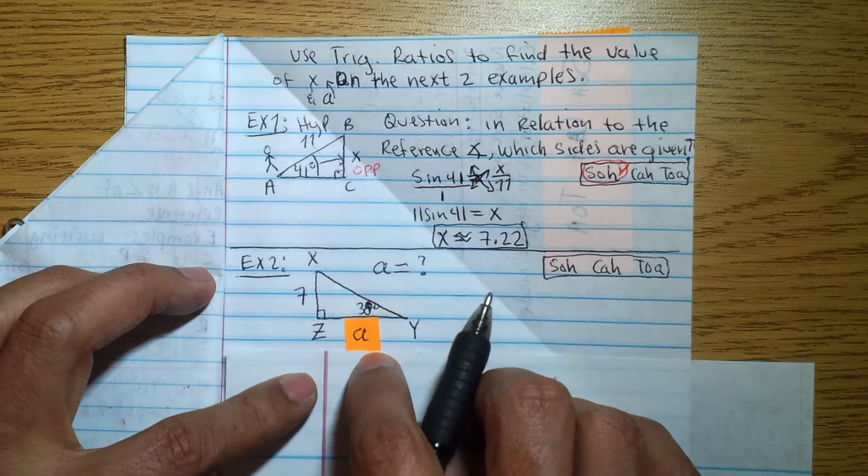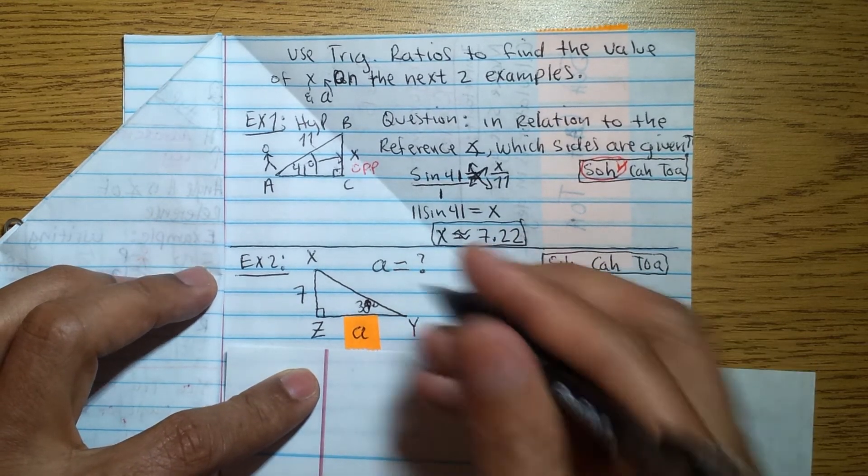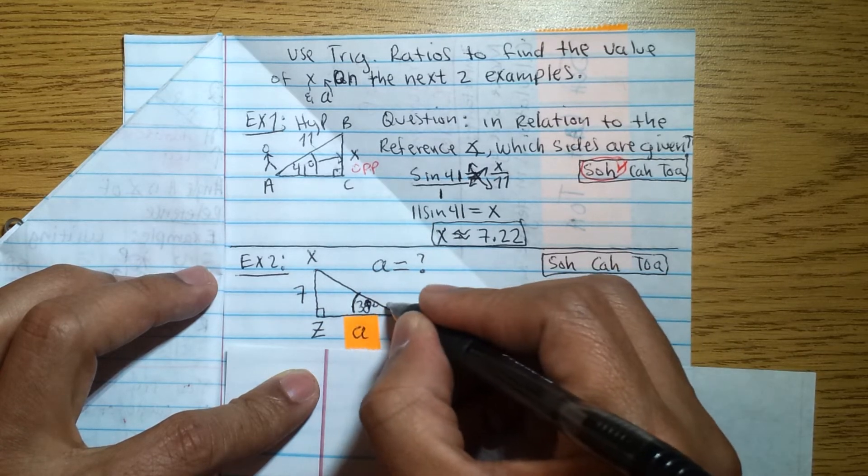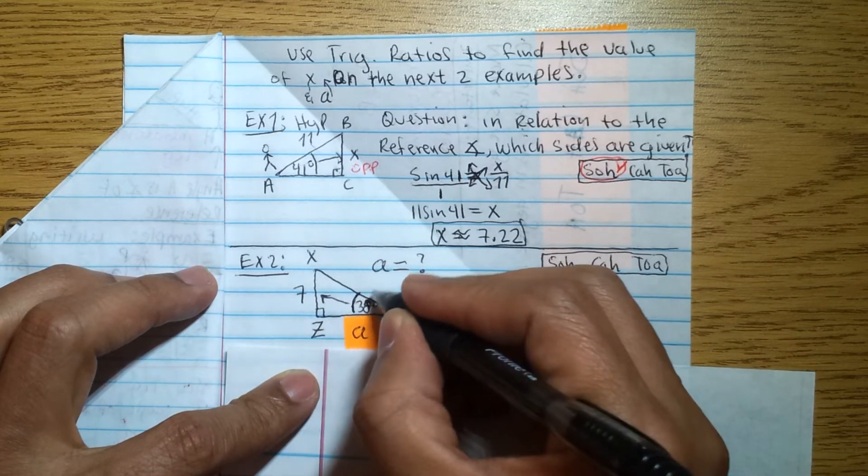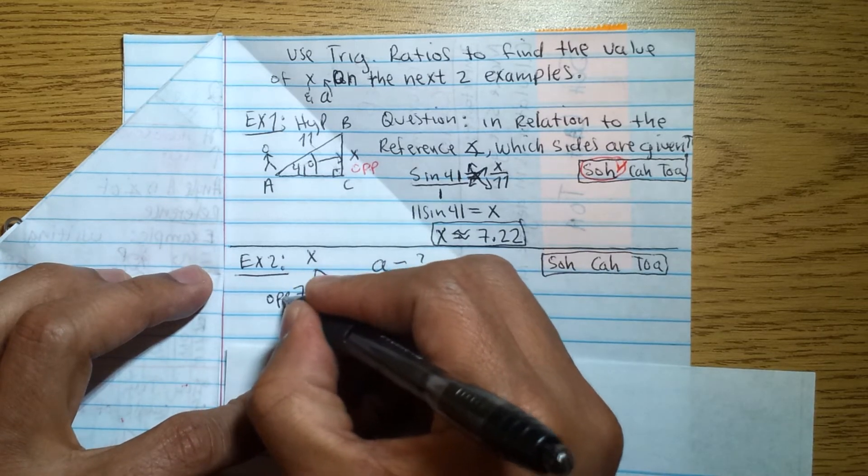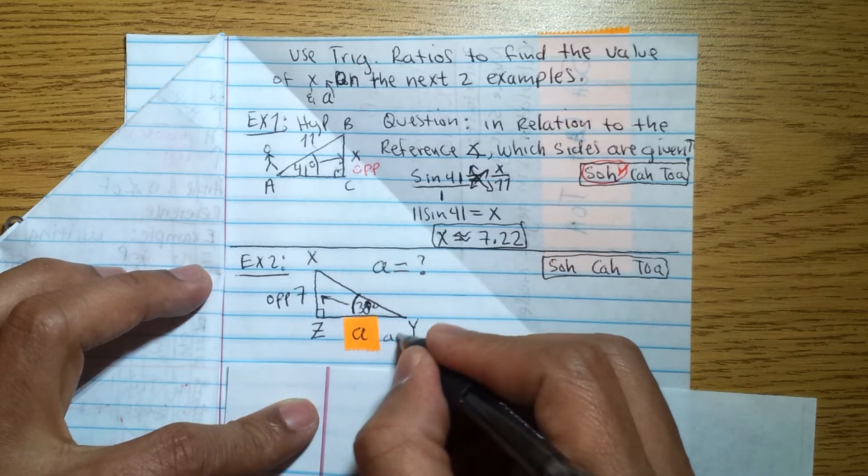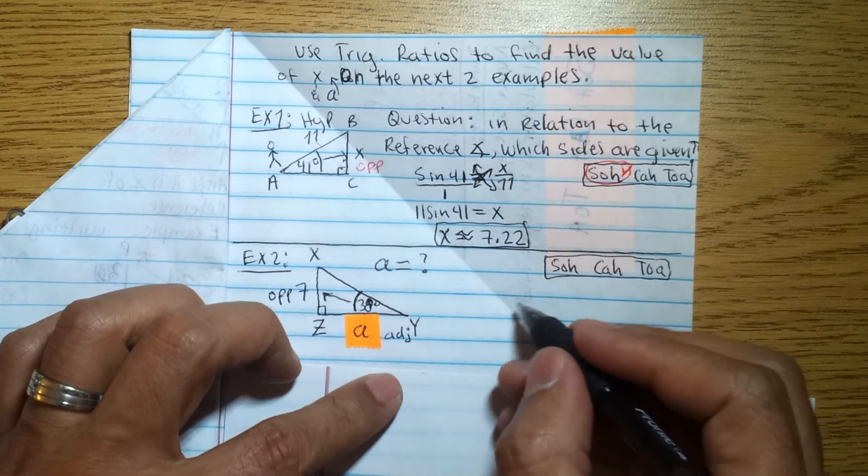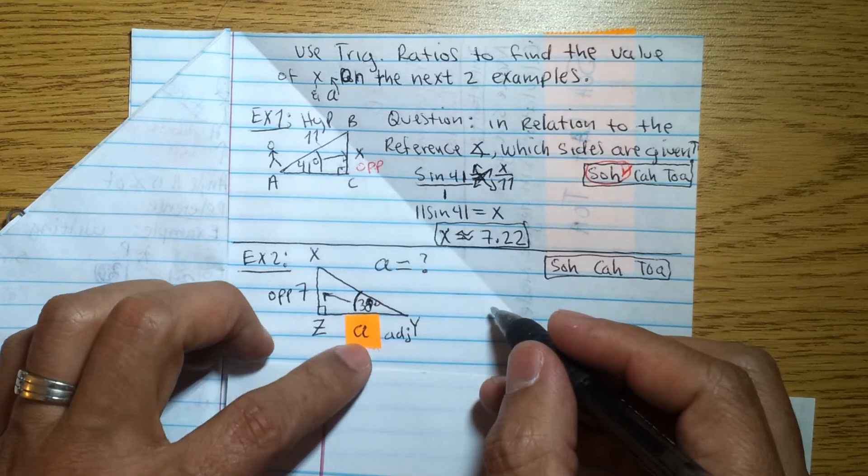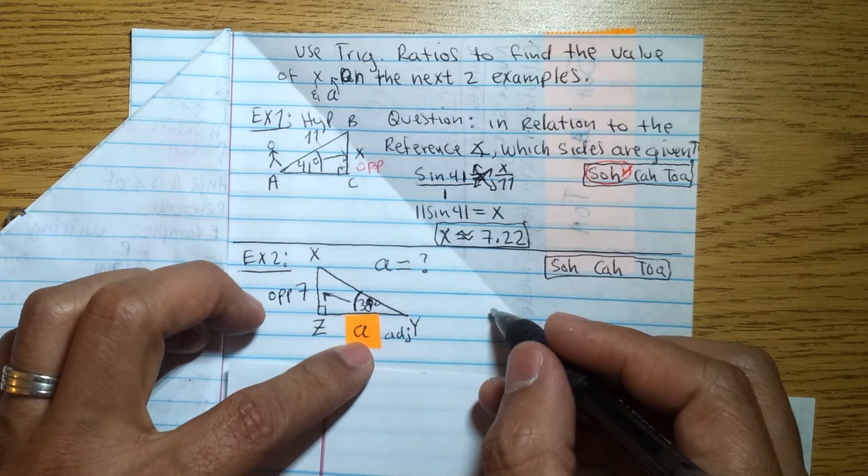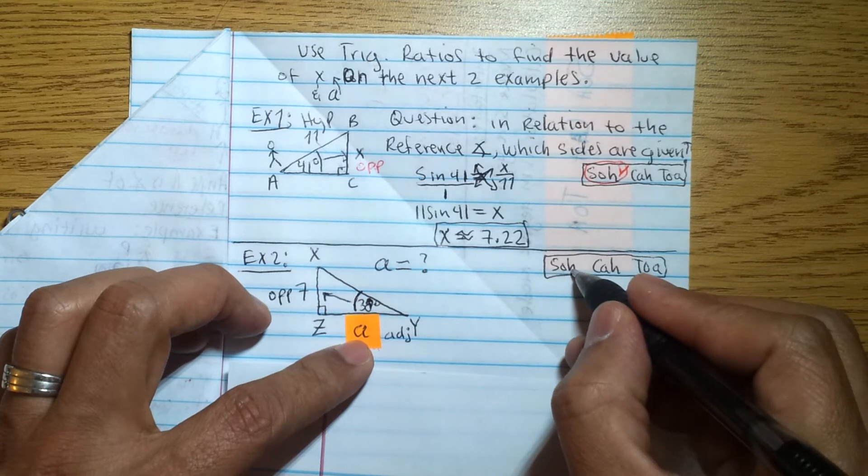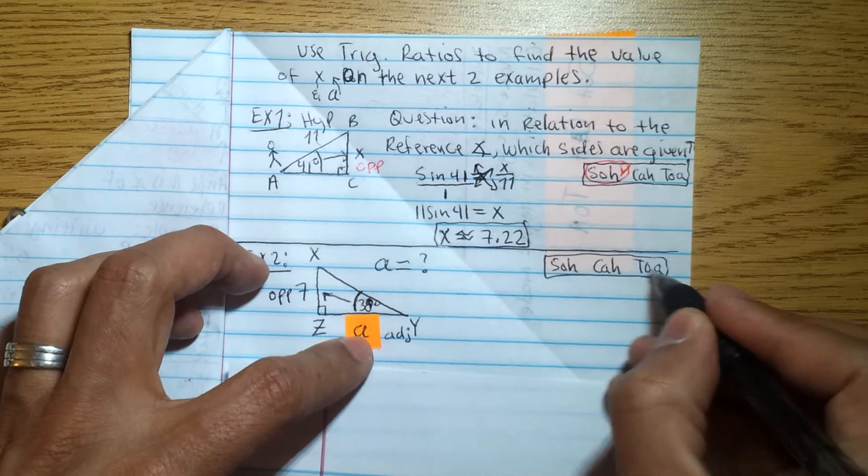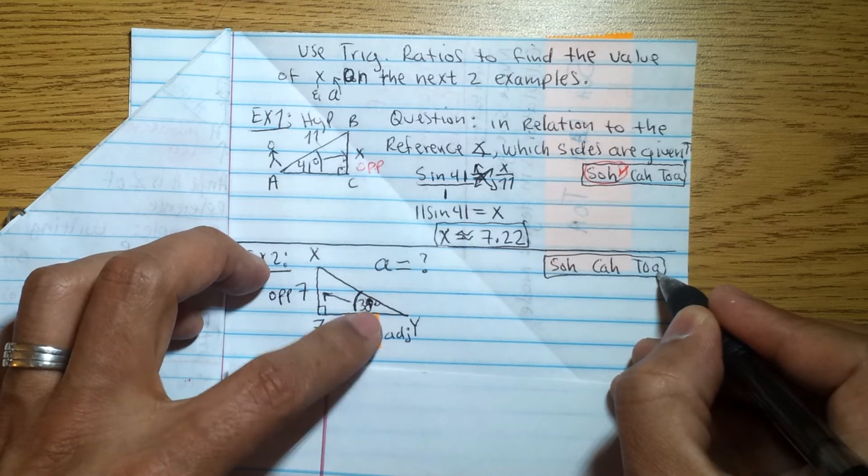We need to find the value of A, so that's this side here. Again, let's pay attention to what we're given. We're given this angle measure, so in relation to the angle, what we're given is the opposite side, and A is adjacent. So we have the opposite and the adjacent. So then if we have the opposite and the adjacent, we have O and A. This has O and H, so we cannot use sine. This is A and H. We don't have H. We're not given the hypotenuse. We're given opposite and adjacent, so that means we're going to use tangent.